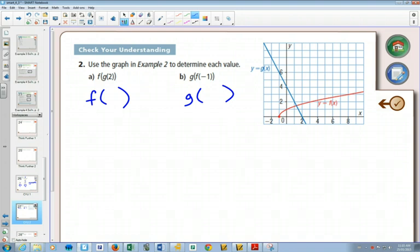All right, how did you do? If we look at our function, g of 2, g of 2 is 0. And then when we look at 0, plugging in 0 into f, that will give us 1. When we plug f of negative 1 in, we get 0. And then when we plug 0 into g, we get 4.